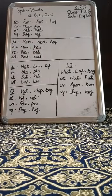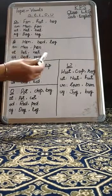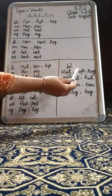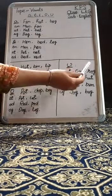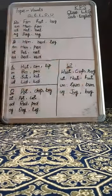The last vowel is U. The sound of vowel U is 'uh'. For example: Hut, Cup, Rug.